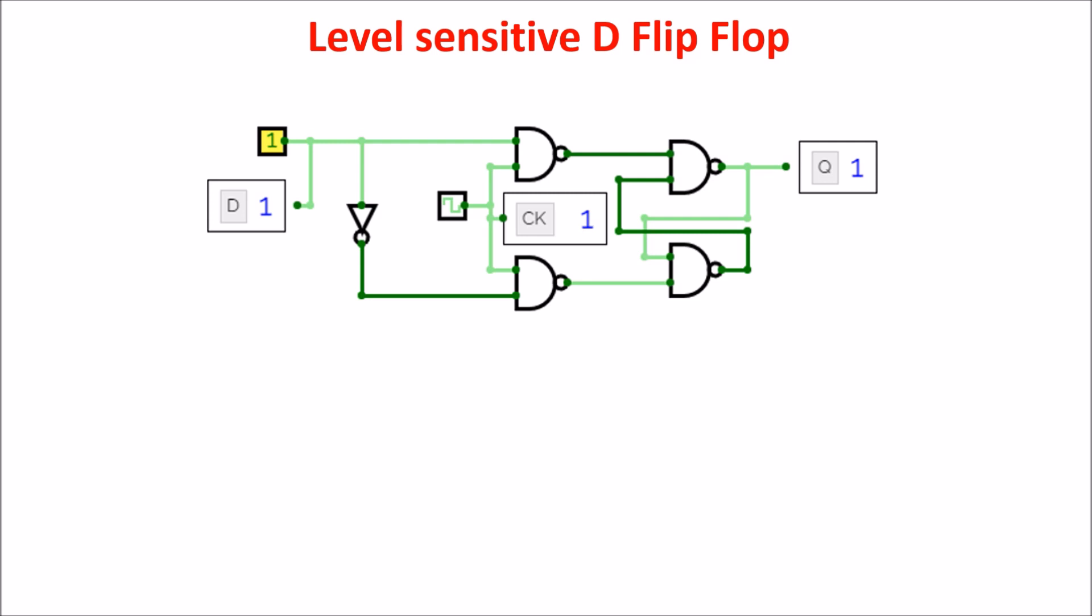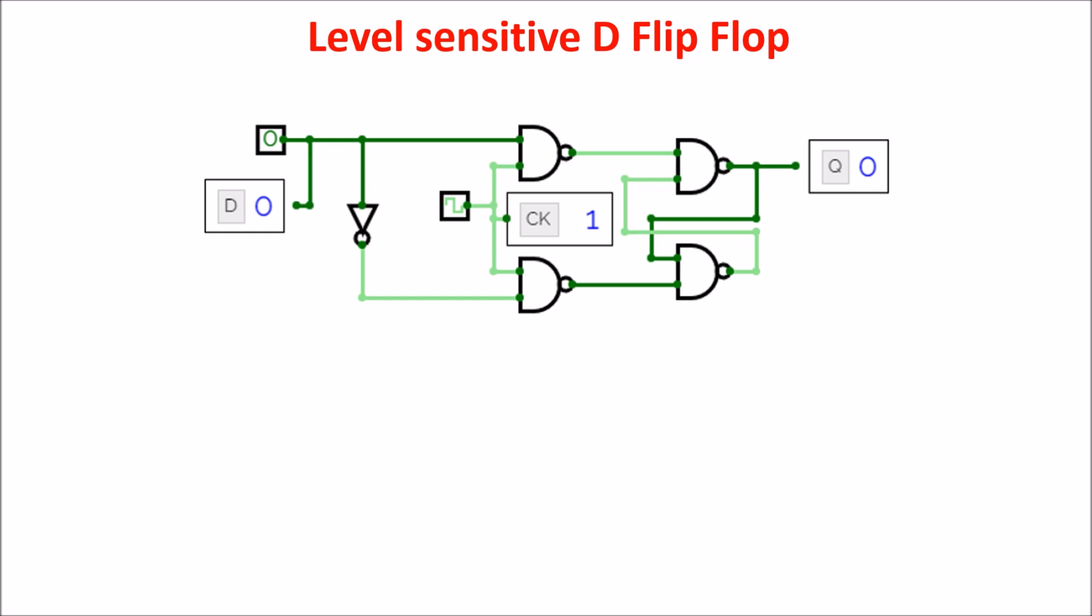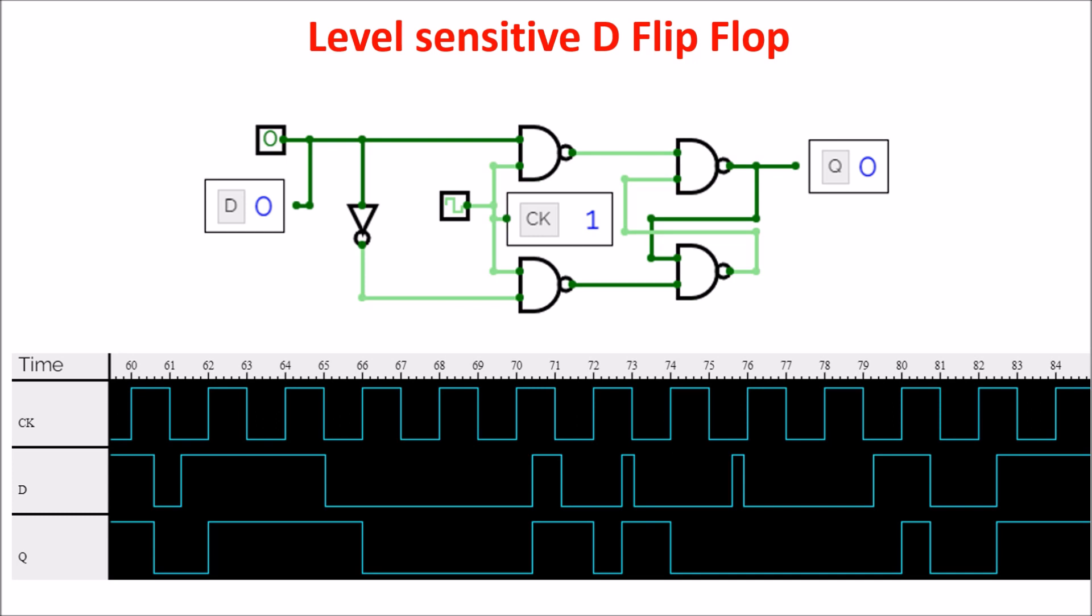Let's see the circuit in Circuit-verse simulator. Here we see the situation in which the clock is high and D input is at 1, passing through till Q. Same behavior when the D input is at 0 and the clock is at 1. But let's see the timing simulation. Here you see the clock on the top and below the D input and the Q output.